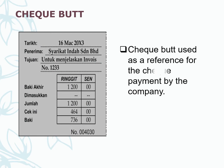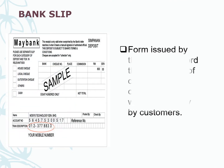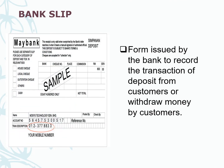Cheque book. A cheque book is used as a reference for cheque payments that have been made by the company. Bank slip. A bank slip is a form issued by the bank to record the transaction of a deposit from a customer or a withdrawal of money by customers.